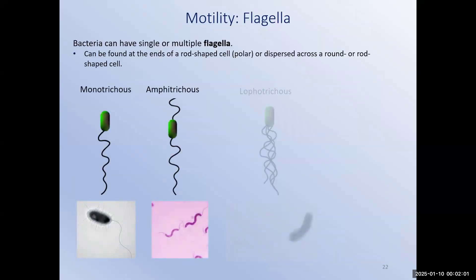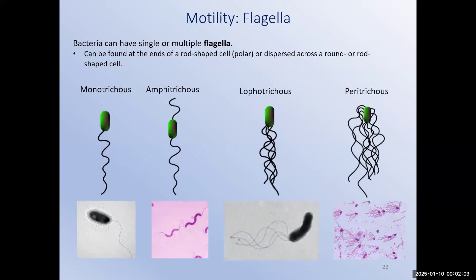Just as bacteria come in a variety of shapes and sizes, those that have flagella have a variety of possible arrangements of those appendages. Polar flagella arise from one or both ends of rod-shaped bacteria. Other bacteria have multiple flagella spread across their cell surface. There are specific names for these distributions over the surface of the bacteria, but they're not necessary to know for our purposes.